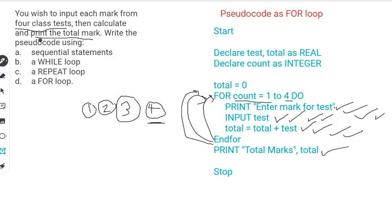That's it for this section. Today we practiced creating pseudocode using different constructs — sequential statements, a WHILE loop, and a FOR loop. Remember, any questions you have, leave them in the comments and I'll see you in the next Study Time with KP. Bye!